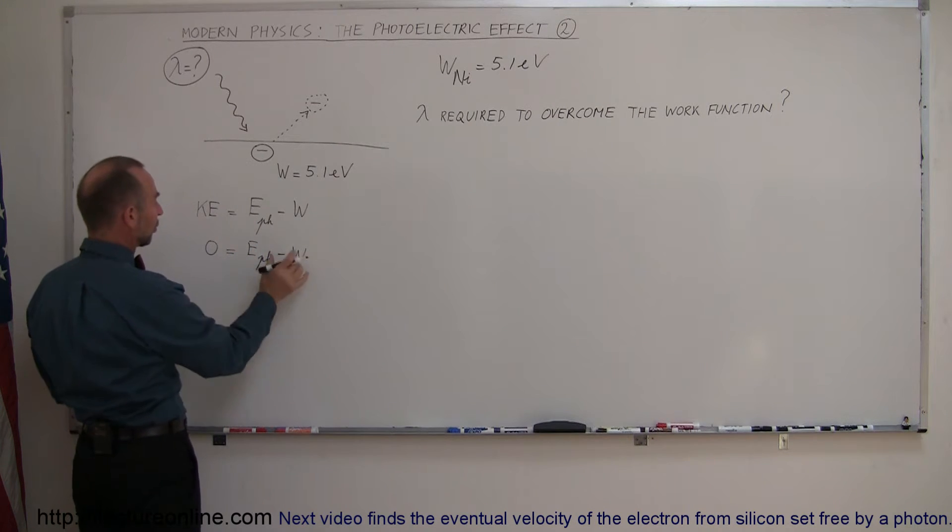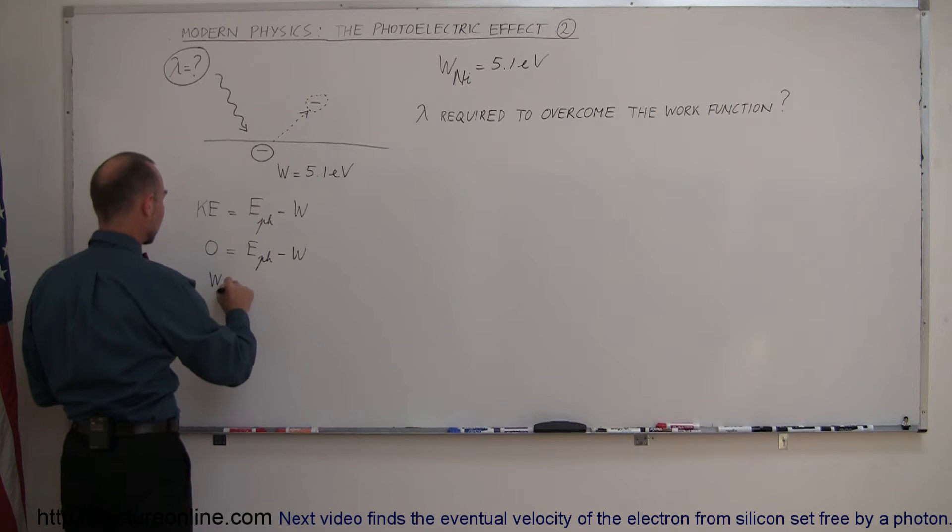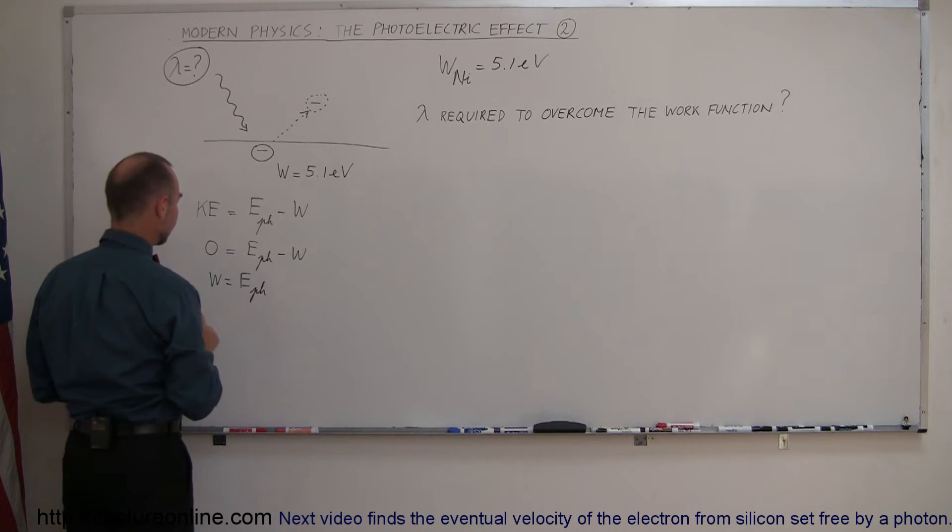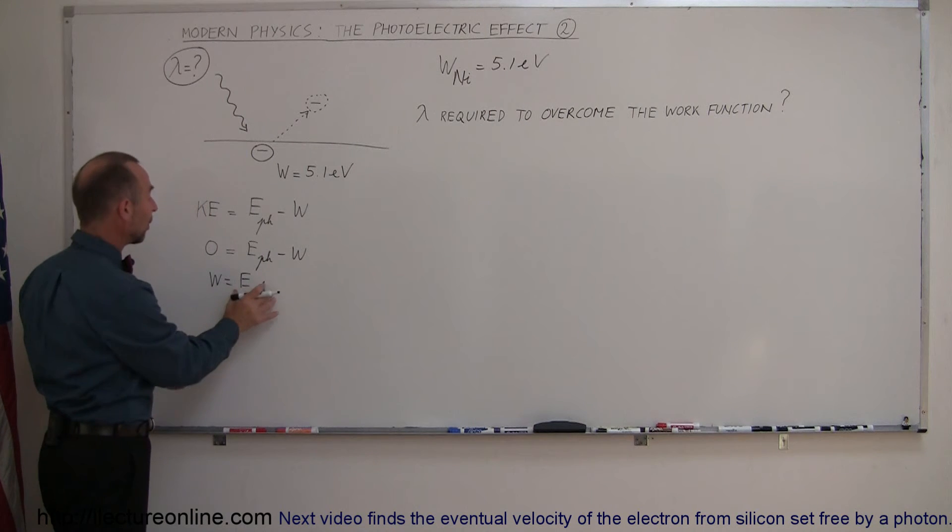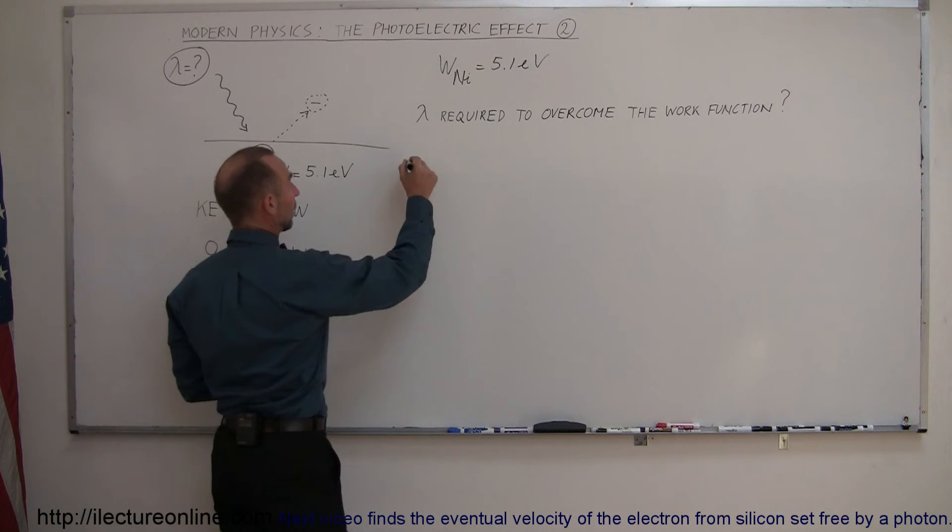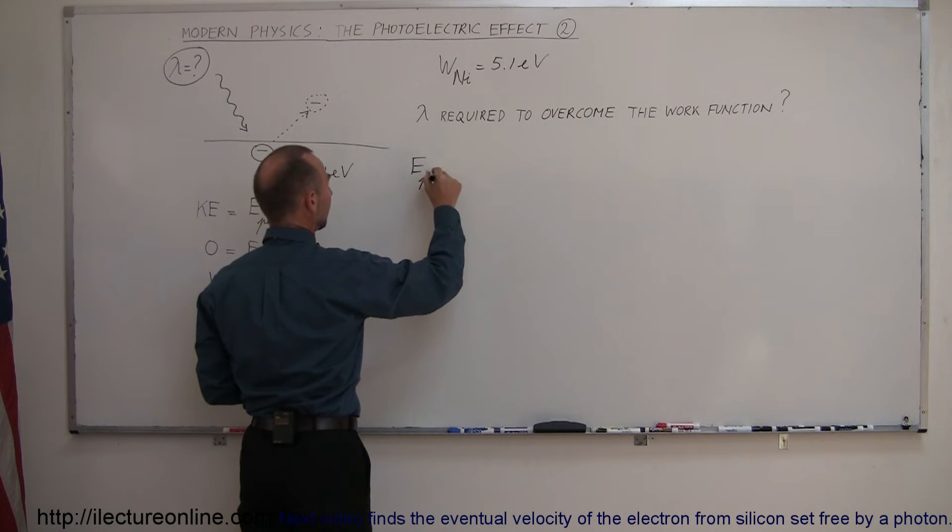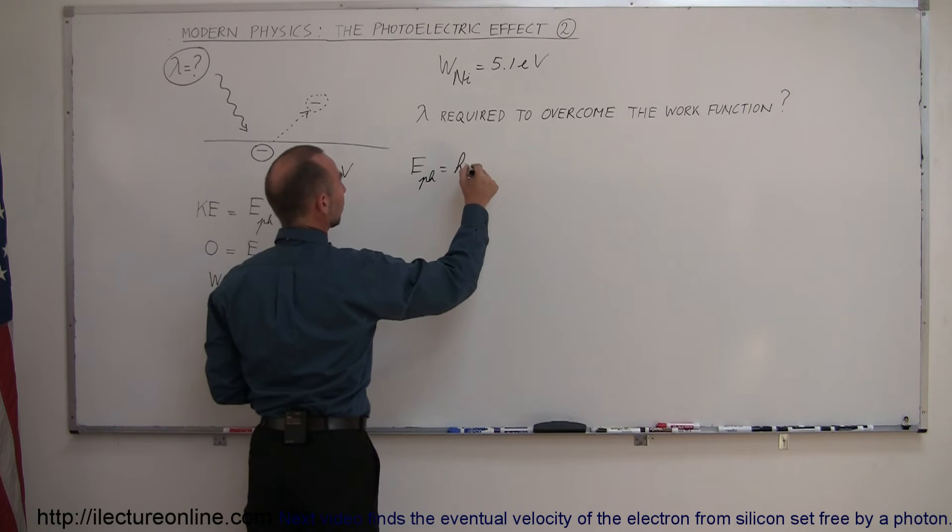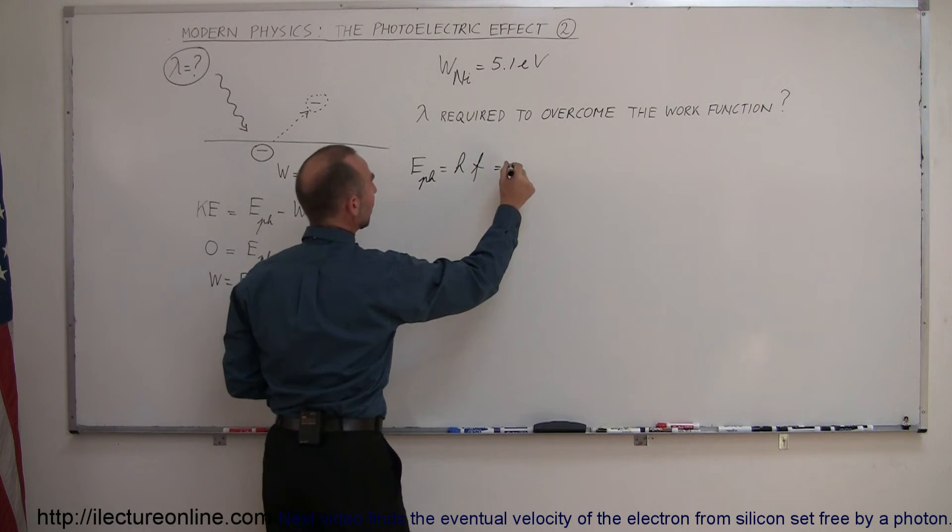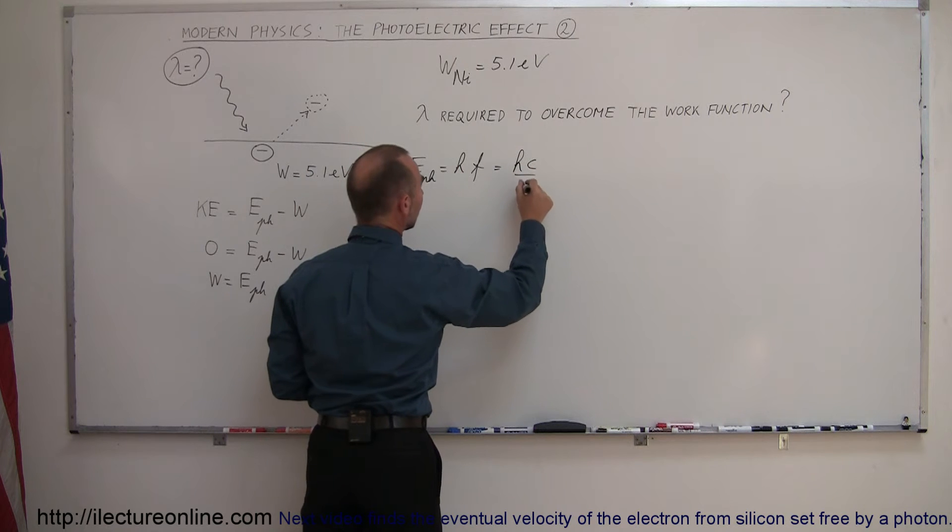So then if we put the work function on the other side, we have the work function equals the energy of the photon. We can go ahead and solve it like that, because then what we're going to do is equate the energy of the photon to the wavelength. So the energy of the photon is equal to Planck's constant times the frequency of the photon, which can be written as hc over lambda.